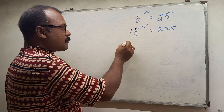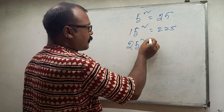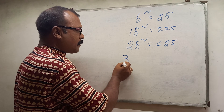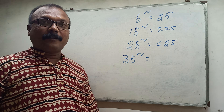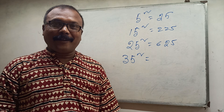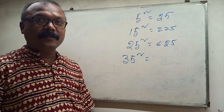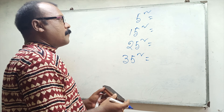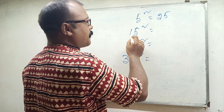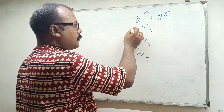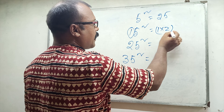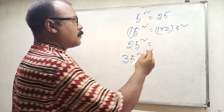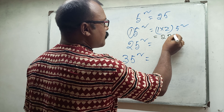So 25 squared. This is the same. Now let's see: 5 squared is 25, and 15 — this is 1 times 2, and 5 squared. So 1 into 2 is 2, and 5 squared is 25.